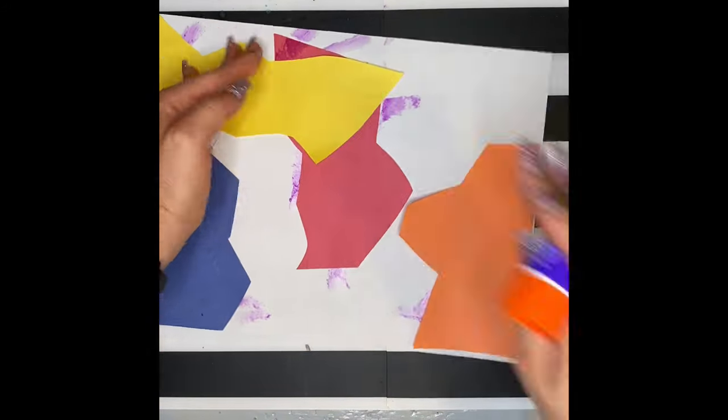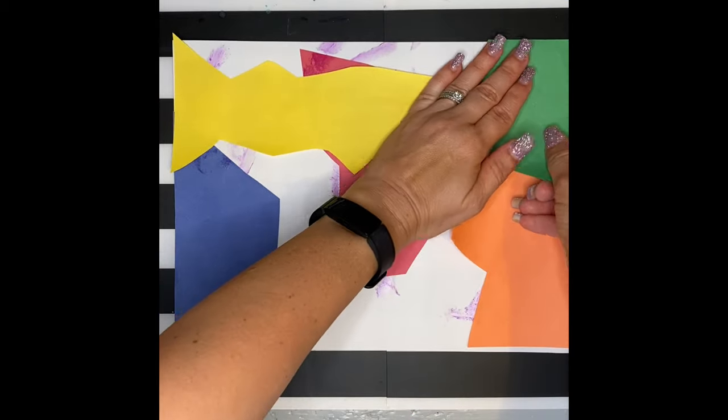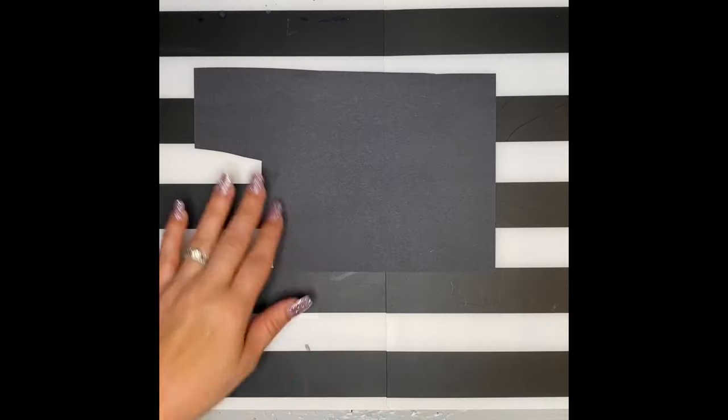Don't be afraid to overlap your shapes as well. I like how my yellow goes on top of my red. That is a form of overlapping. And my green goes on top of my orange. Make sure everything's glued down nice and tight.